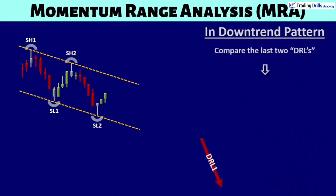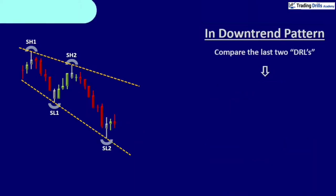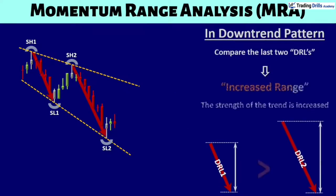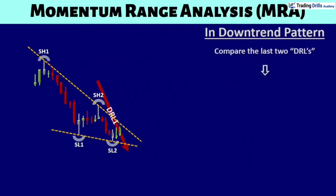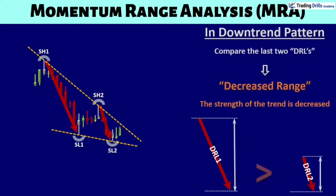In the momentum range analysis of an established downtrend, compare the last two downward range lines. No change in range means the strength of the trend is constant. An expansion of the range means the strength of the trend is increasing. A contraction of the range means the strength of the trend is decreasing.